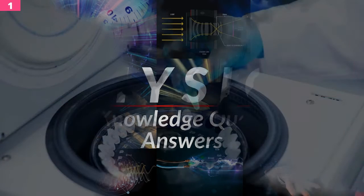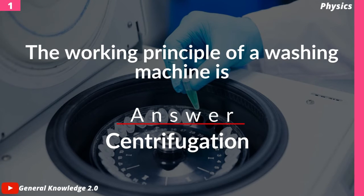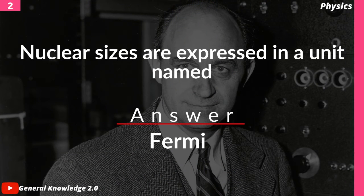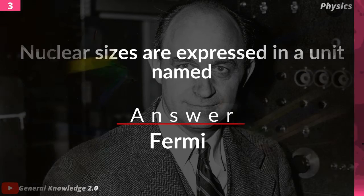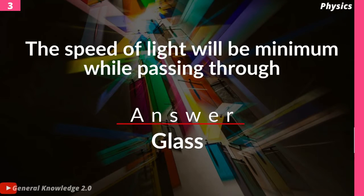The working principle of a washing machine is — answer: centrifugation. Nuclear sizes are expressed in a unit named — answer: fermi. The speed of light will be minimum while passing through —